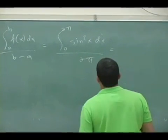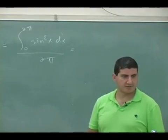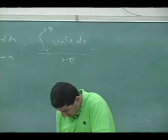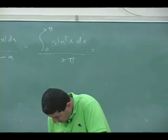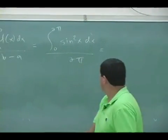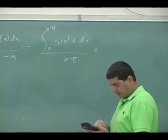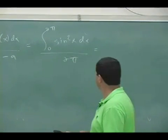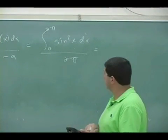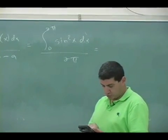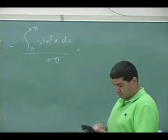Or we could just simply use our TI calculators. So go to your fn int, and I'm going to do fn int sine of x quantity squared, comma 0, comma 2 pi. That's it, enter.